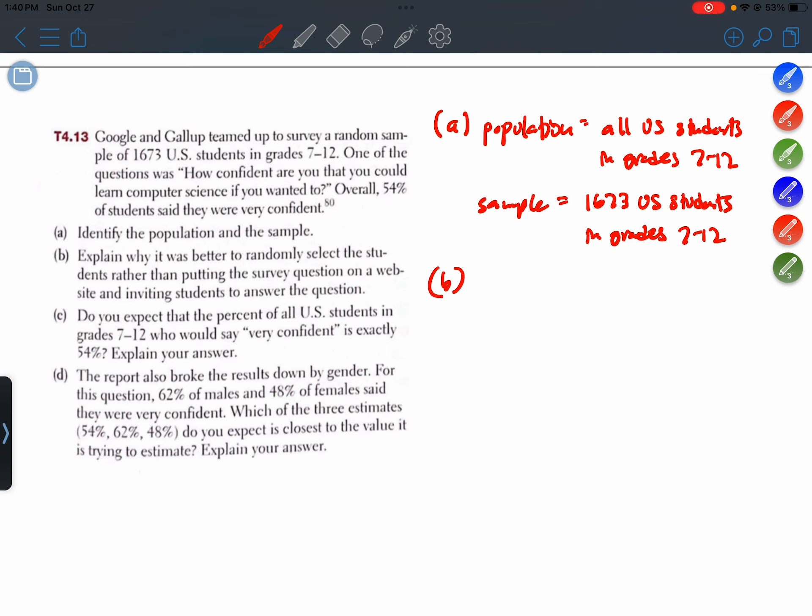Part B. Explain why it was better to randomly select the students rather than putting the survey question on a website and inviting students to answer the question. All right. Well, that suggestion would be a voluntary response sample which would almost certainly lead to bias.